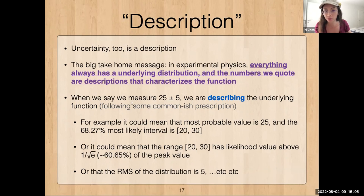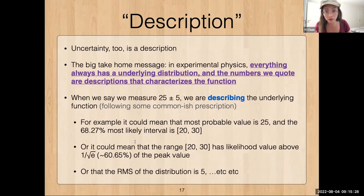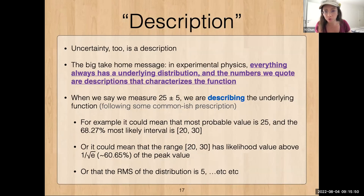As an example, when we say we measure 25 ± 5 from experiment, what we're really doing is describing the underlying function. There are many different prescriptions on how to get this number and they can mean different things. For example, it could mean the most probable value is 25 and the 68% most likely interval is 20 to 30. Or it could mean the range from 20 to 30 has likelihood value above some threshold. It could also mean the RMS of the distribution is 5 — different prescriptions mean different things.